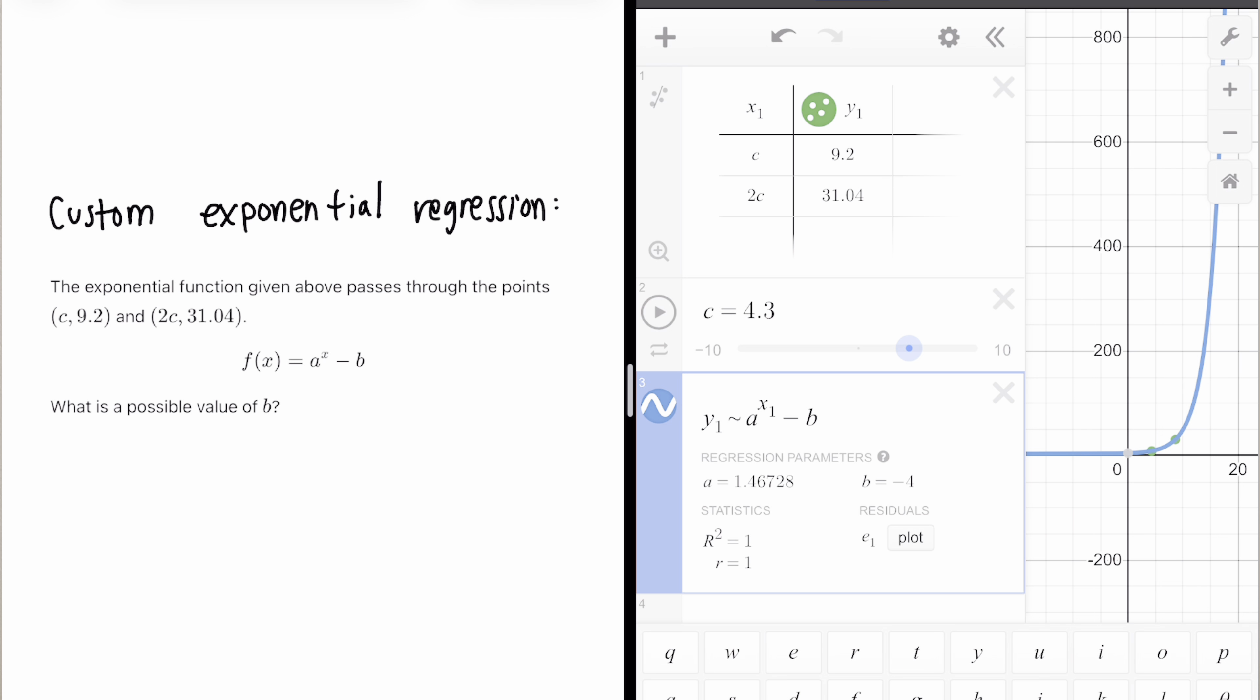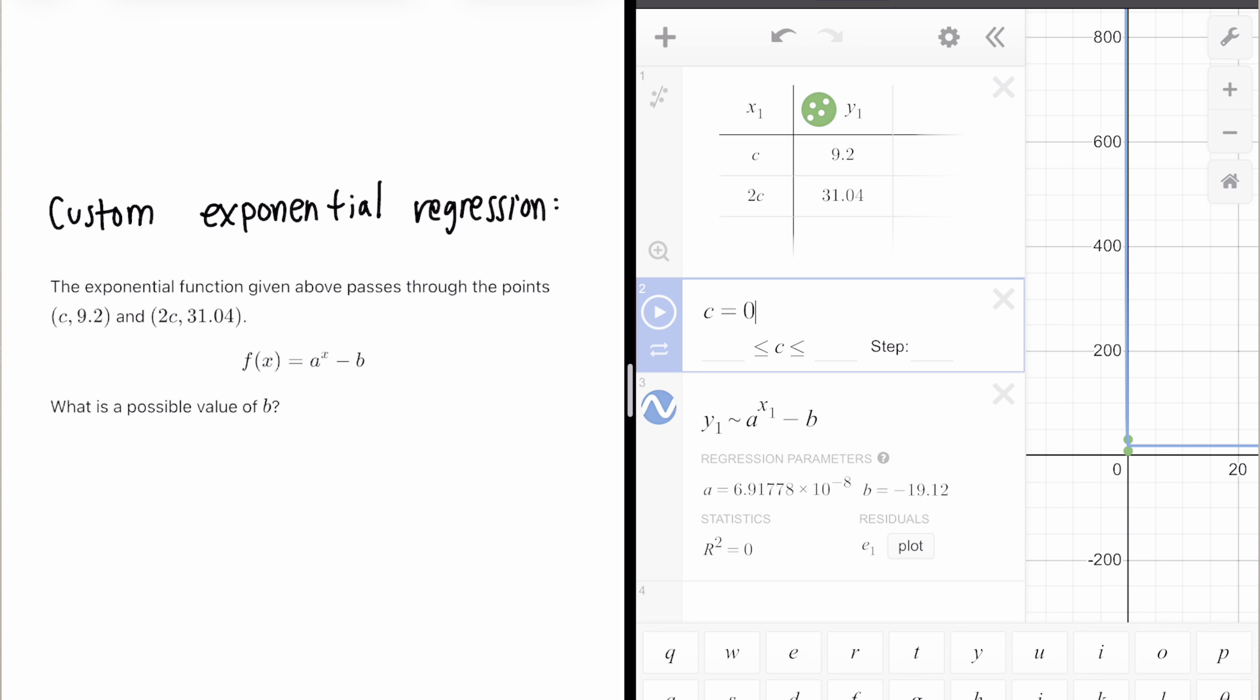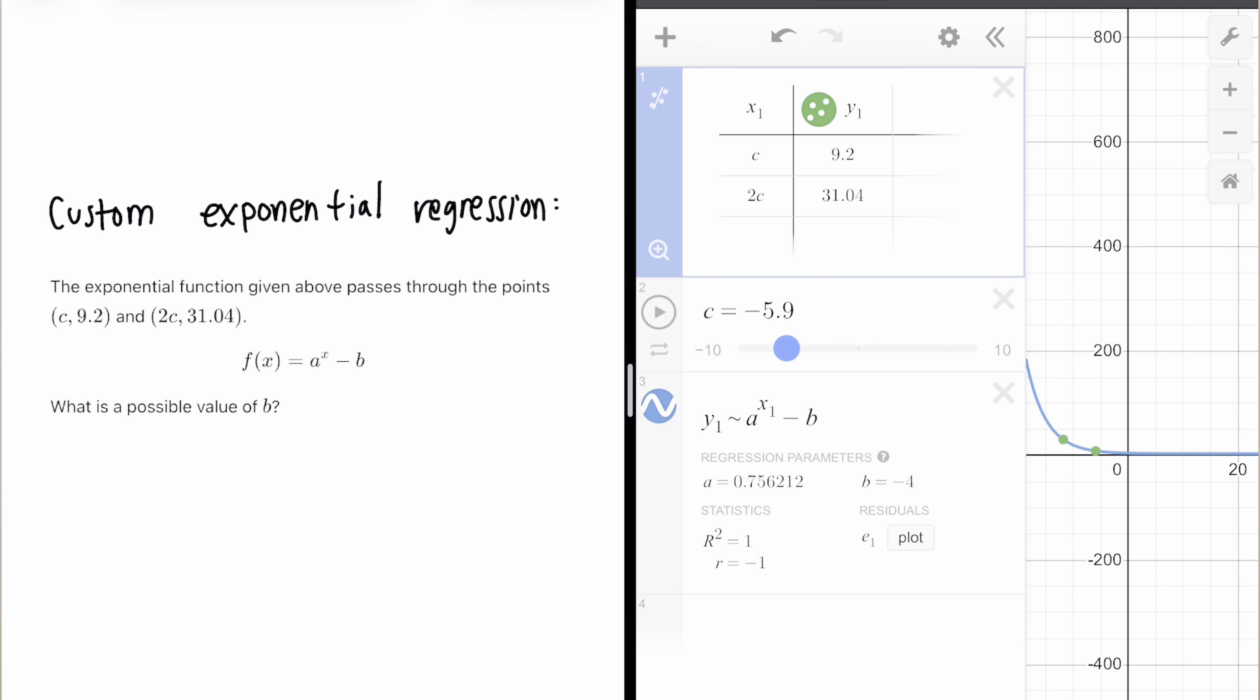You need to make sure that this question is correct. So what you want to do is adjust your slider for C and check whether or not B remains the same. Now, the only spot where B isn't the same is when C is zero. But C can't be zero because then this function wouldn't be a function. There would be multiple Y values at the same X value of zero. B is always going to be -4. That's why our answer is -4.